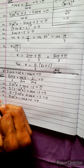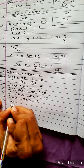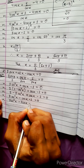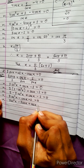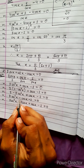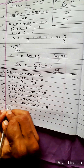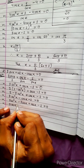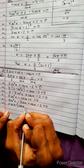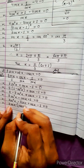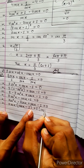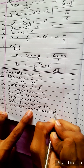Using the middle term splitting method: 2cos²x - 2cos x + cos x - 1 = 0. Taking 2cos x common from the first two terms and 1 common from the last two terms.